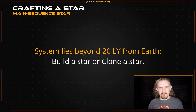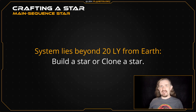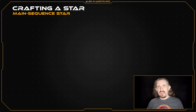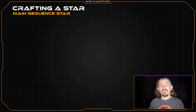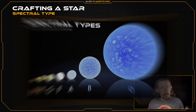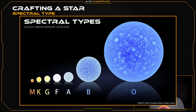However, if your fiction requires you to have several custom stars, say to fill out a galactic empire, then this method may be more trouble than it's worth. If you're not going to use a nearby star or clone an existing star, then you'll need to build one. The first step in creating our main sequence star is choosing its spectral type. In my previous video, I explained how main sequence stars are divided into seven subcategories called spectral types, labeled O, B, A, F, G, K, and M,